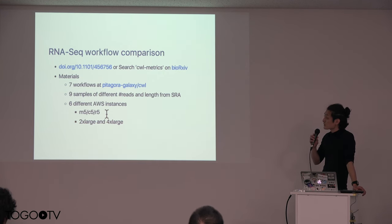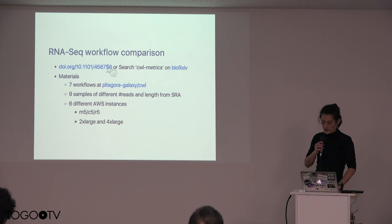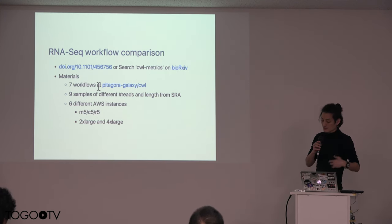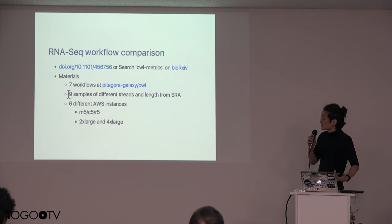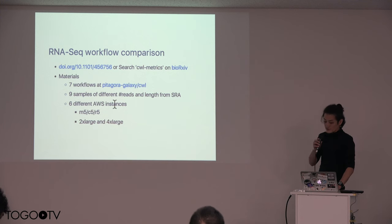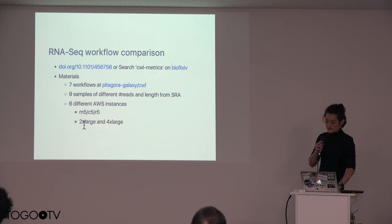By using CWL metrics, we performed workload comparison using RNA workloads. I have already uploaded the manuscript to bioRxiv — you can search 'CWL metrics' on bioRxiv to read everything. We used several workloads published in GitHub repositories. We downloaded nine samples of different numbers of reads and lengths from a public NGS data repository. We used six different AWS instances: M5, C5, and R5 — which are general, compute-optimized, and memory-optimized — with different CPU core counts.